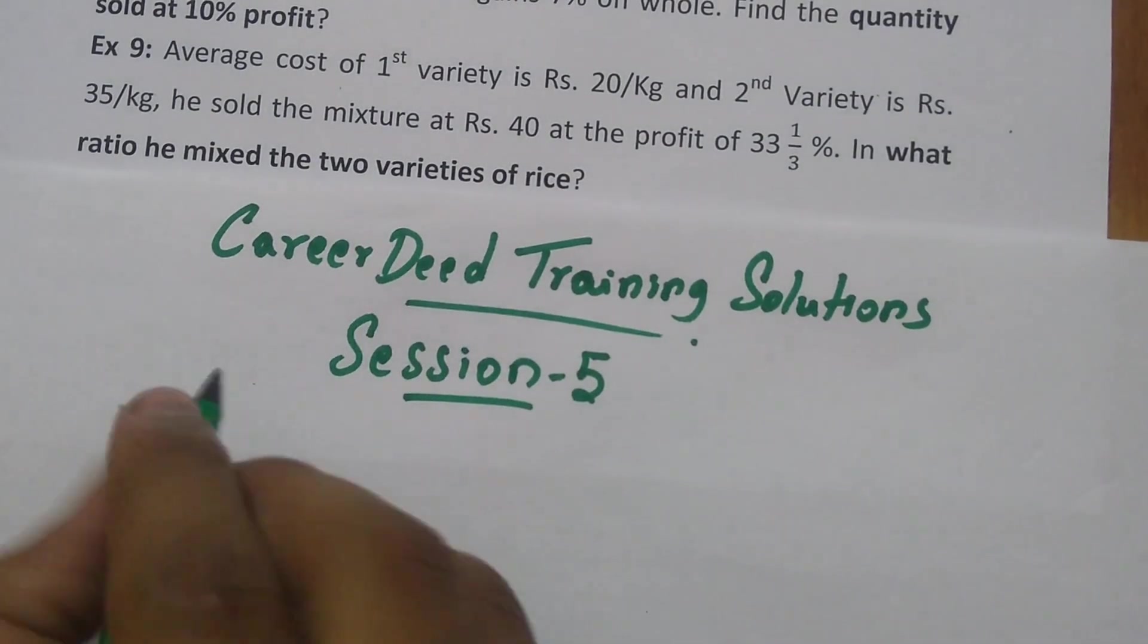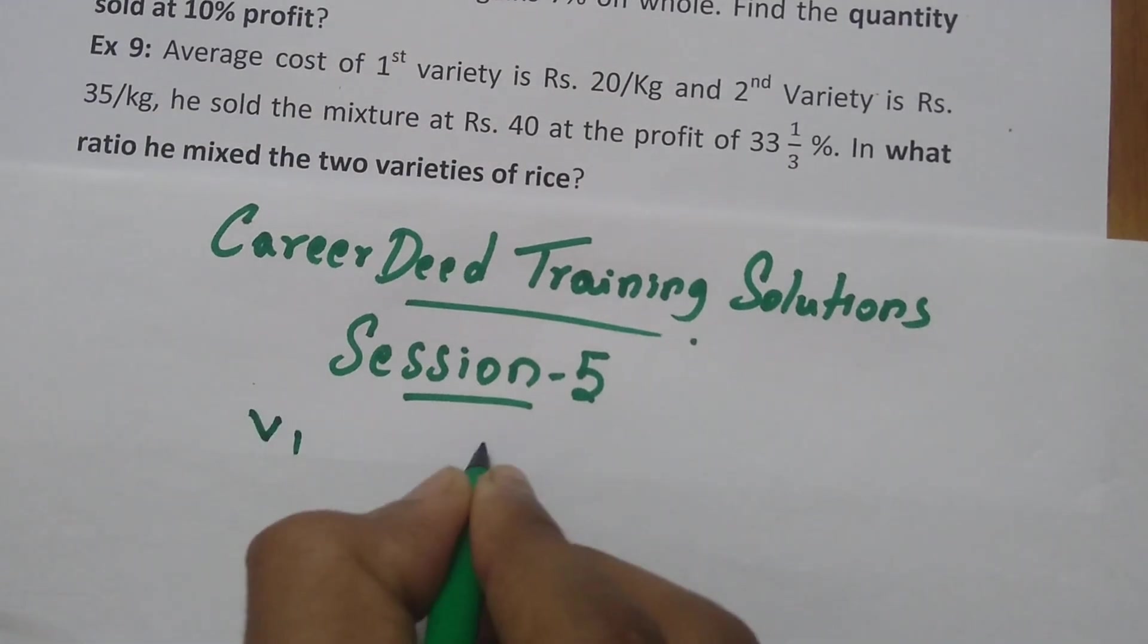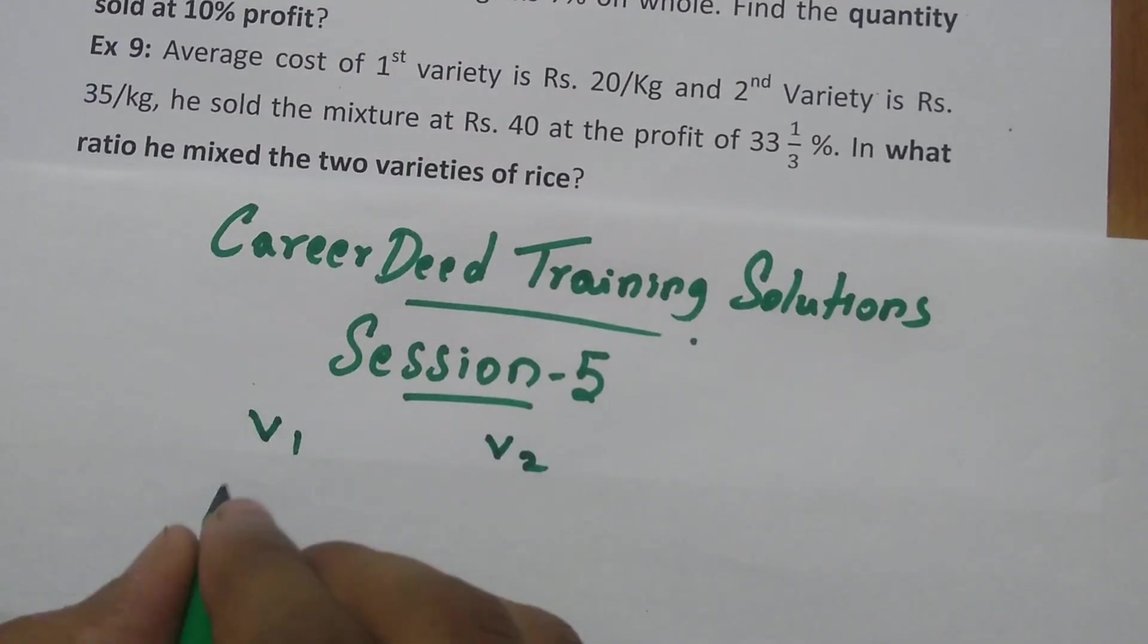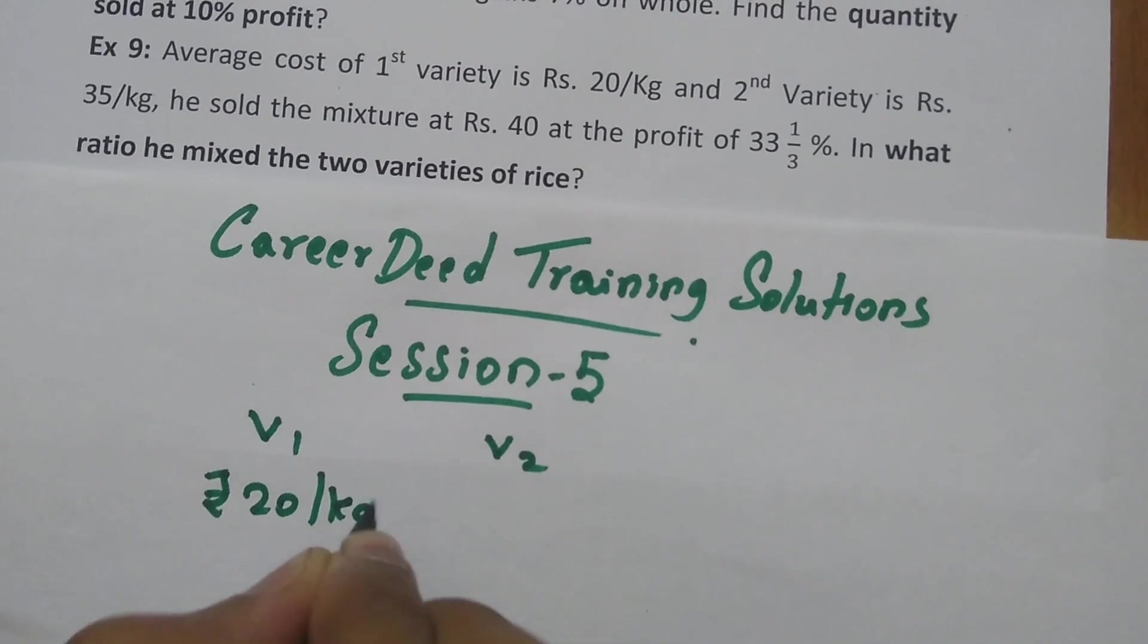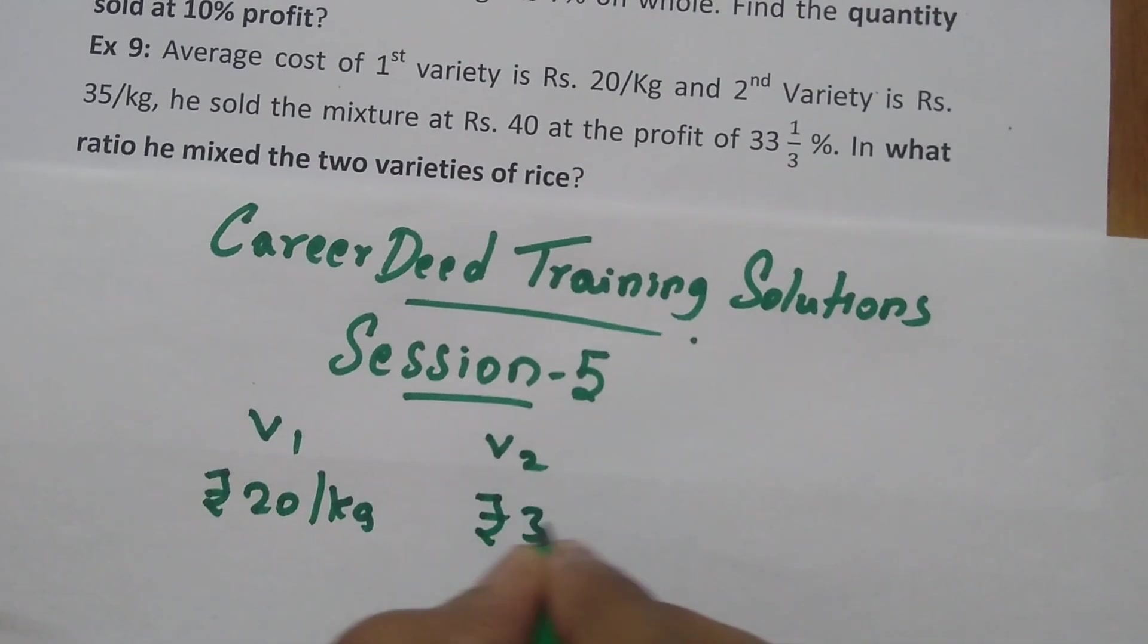Assume you have two varieties of rice: Variety 1 and Variety 2. The cost price of the first variety is Rs. 20 per kg and the cost price of the second variety is Rs. 35 per kg.